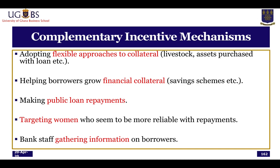MFIs also employ other complementary incentive mechanisms. One is adopting a flexible approach to collateral — they can accept livestock or assets purchased with the loans, and they help borrowers grow financial collateral through savings schemes. They also make loan repayments public, which provides an incentive for repayment since the inability to pay becomes visible to the community. Additionally, MFIs target women who, based on research, appear to be more reliable with repayments, and bank staff gather information on borrowers held in MFI records.